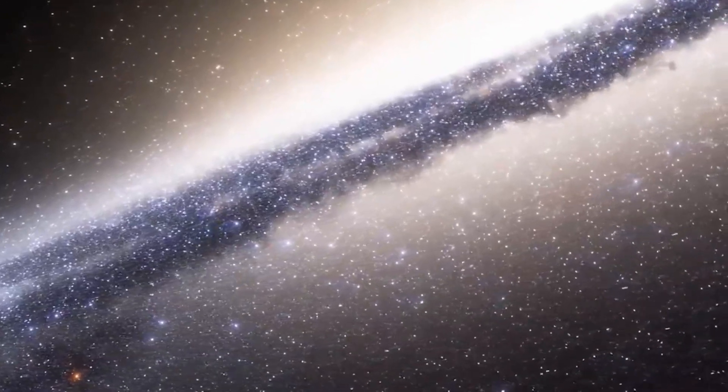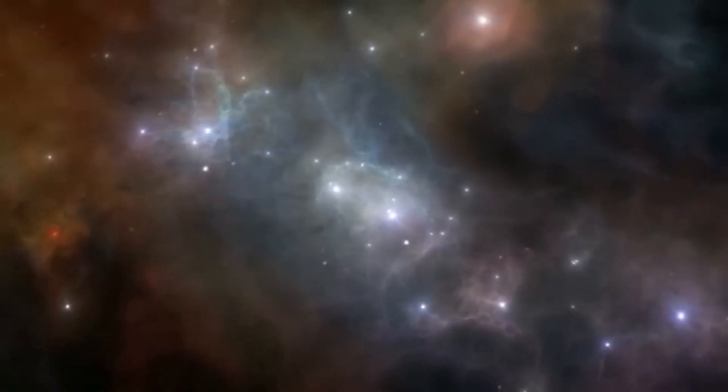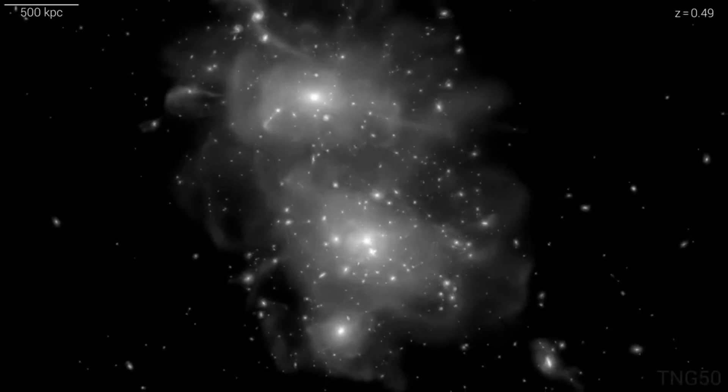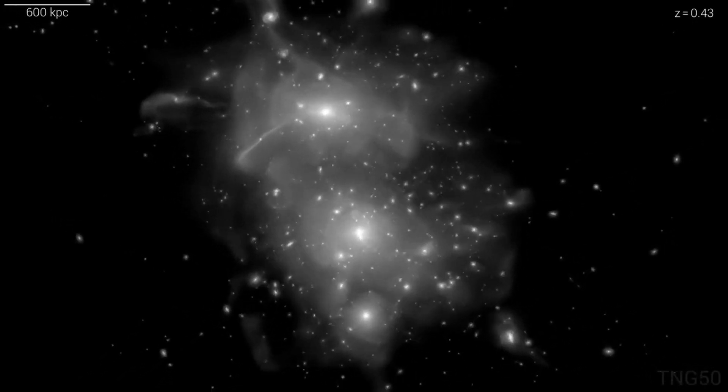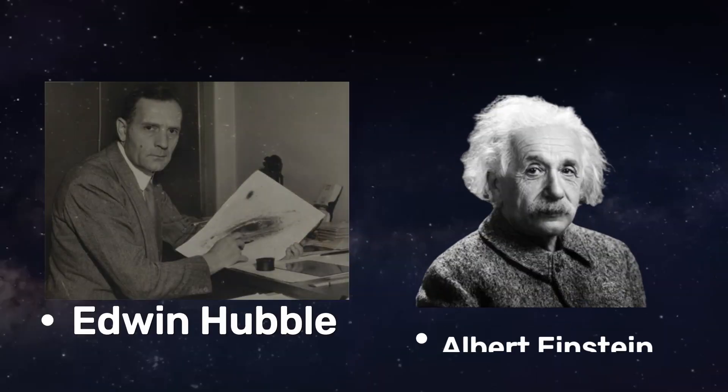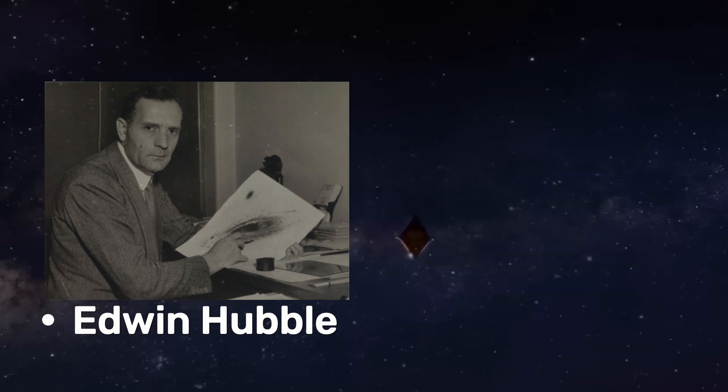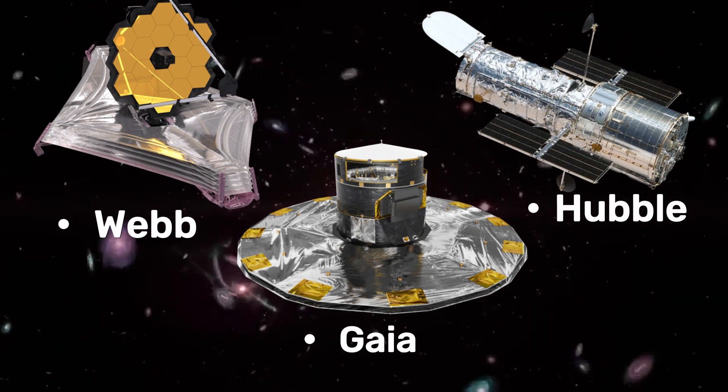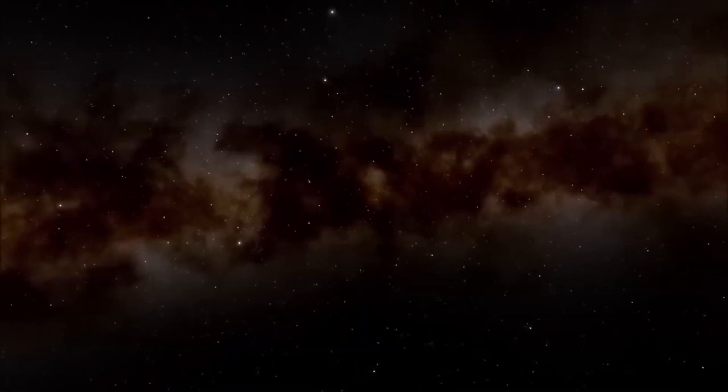Well there you have it, the epic multi-billion year story of the Milky Way's inevitable merger with Andromeda. From their halos' initial overlap to the merger's dramatic finale, we've traced our galaxy's cosmic evolution across deep time. We explored how scientists like Hubble, Einstein and today's astronomers uncovered secrets of the merger through technological wonders like Hubble, Webb and Gaia. And we imagined what the merger might look like in humanity's far future.